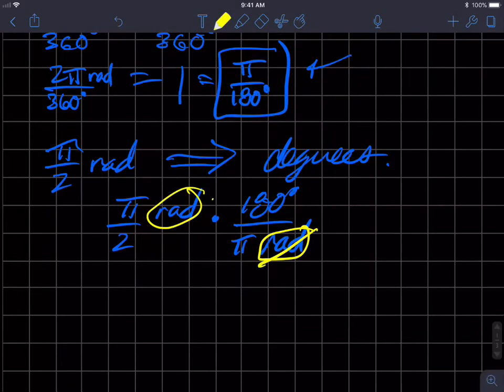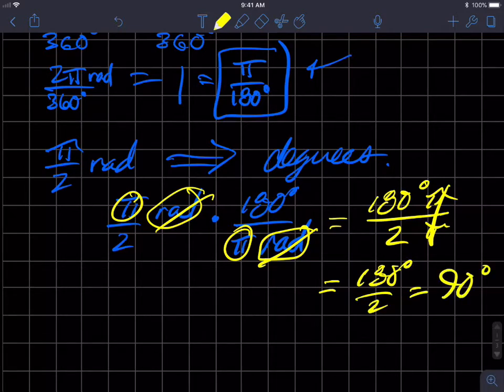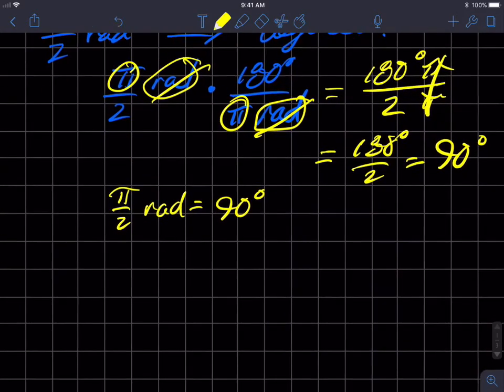And I get 180 degrees times π over 2, which ends up being... I'm sorry, notice how the π's equal 1 as well. And so I get 180 degrees over 2, which is 90 degrees. And in fact, π over 2 radians is equal to 90 degrees. We can do that over and over again.